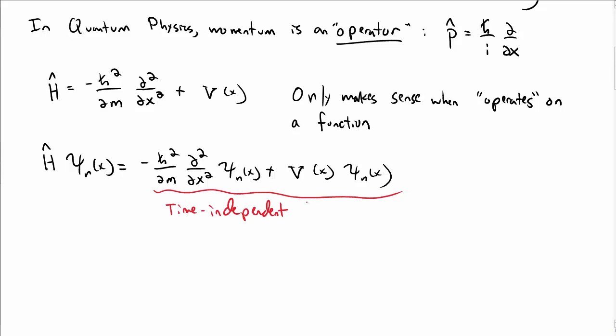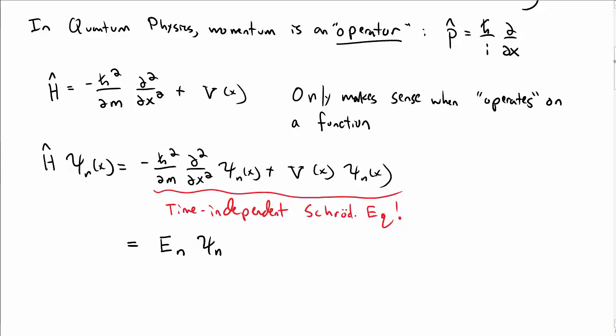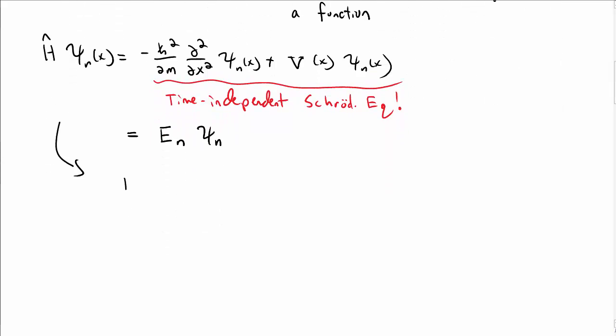But this is just the time independent Schrödinger equation. We've seen that before, and we know that that must then be equal to e sub n times psi sub n, as long as psi is the solution to the time independent Schrödinger equation. So we have h-hat psi equals e psi. This is why we called e the energy, because it's connected to h, the Hamiltonian.